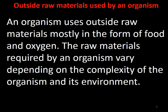What are the outside raw materials used by organisms? An organism uses outside raw materials mostly in the form of food and oxygen. The raw materials required vary depending on the complexity of the organism. In human beings or any other living being, food and oxygen are the basic needs, but for aquatic animals there might be different criteria, depending on whether they are in terrestrial or aquatic form.